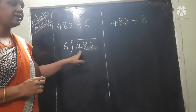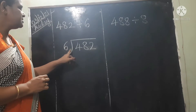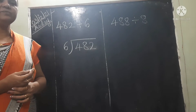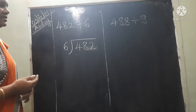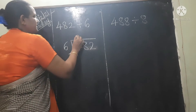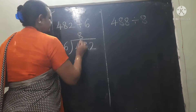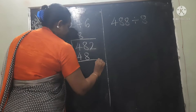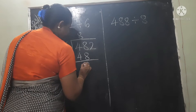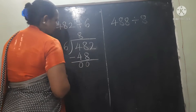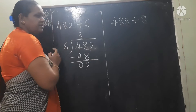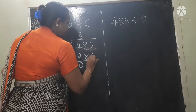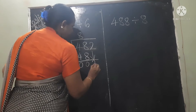In the 6 times table, 48 comes at which place? 6 eights are 48. Now we are having another number, so this number we have to carry down.